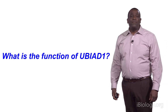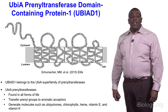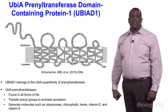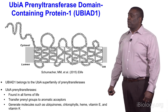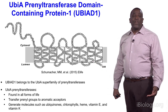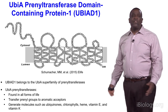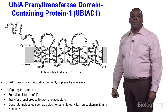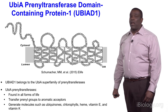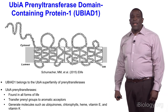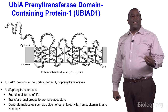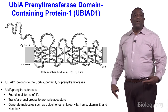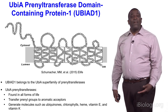So what is the function of UBIAD1? UBIAD actually stands for UBIA prenyltransferase domain containing protein 1. UBIAD1 is a membrane protein with 8 to 10 transmembrane domains. It belongs to the large family of prenyltransferases called UBIA prenyltransferases, which are found in all forms of life from bacteria to man. They all transfer prenyl groups to aromatic acceptors, generating a wide range of molecules such as ubiquinones, chlorophylls, heme, vitamin E, and vitamin K.